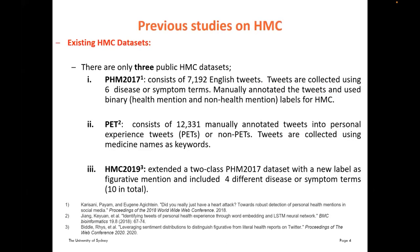Regarding previous studies on HMC, we divided our literature review into two areas: existing HMC datasets and HMC techniques. Currently there are only three publicly available HMC datasets. The first consists of 7,192 English tweets collected using six disease or symptom terms, manually annotated with binary labels for HMC. The second dataset is PHE, which consists of 12,331 manually annotated tweets into personal experience or non-personal experience tweets, collected using medicine names as keywords with no disease or symptom term used.